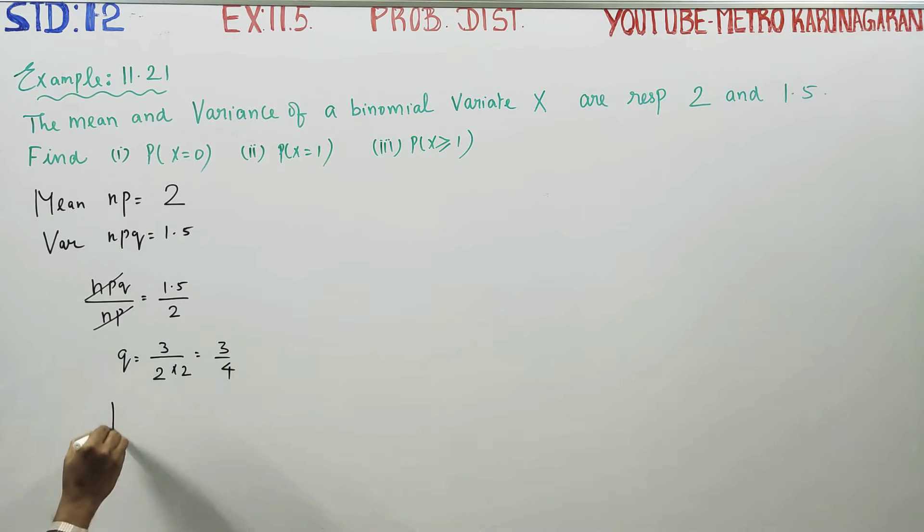This is my p, sorry q. Q ready, for p is 1 minus q, 1 minus 3 by 4. 4 is the LCM, 4 minus 3 is 1 by 4.